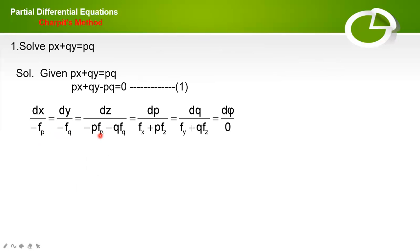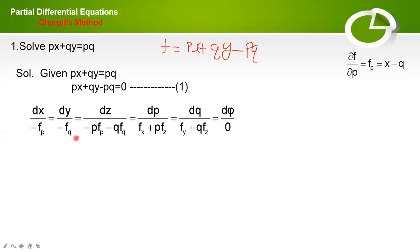From this, we have to find the values of fp, fq, fx, fy, and fz. So, f equal to px plus qy minus pq. Now, fp means differentiating f with respect to p. With respect to p, qy is constant giving 0; derivative of px gives x; derivative of pq gives q. So fp equal to x minus q. Similarly, fq: differentiating with respect to q, px term gives 0, qy gives y, and pq gives p. So fq equal to y minus p. Next, fz: there is no z term, therefore fz equal to 0.